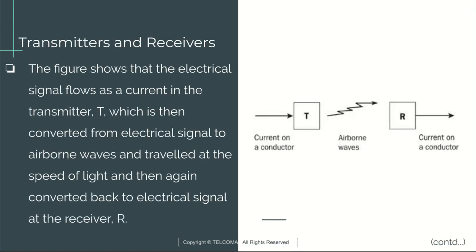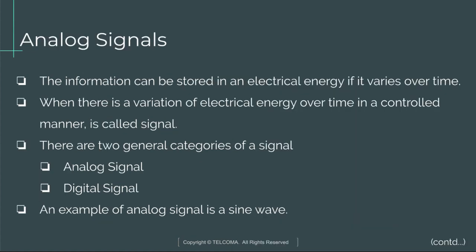This figure shows that the electrical signal flows as current in the transmitter, denoted by T, which is then converted from an electrical signal to airborne waves, traveled at the speed of light, and then again converted back to an electrical signal at the receiver, denoted by R.